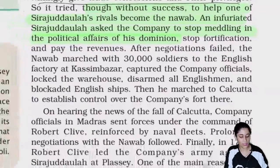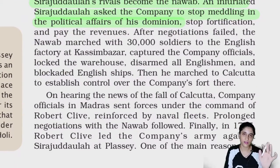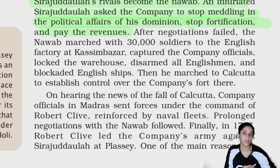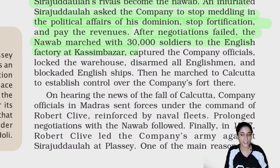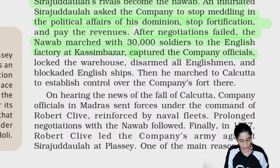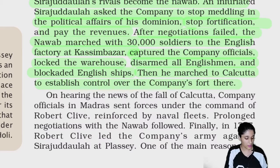Sirajodolla asked the company to stop meddling in the political affairs — do your business, stay out of politics. Stop fortification. And pay the revenues. The Nawab marched with 30,000 forces to the British East India Company's factory, captured the company's officials, locked the warehouse, disarmed all Englishmen and blocked English ships. Then he marched to Calcutta to establish control over the fort there.